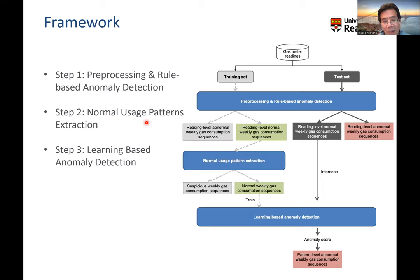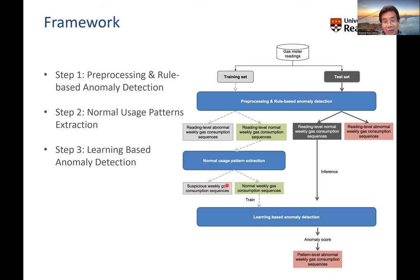Step two is normal user pattern extraction. Using normal user pattern extraction, we can filter out anomalous weekly gas consumption sequences. We use weekly rather than daily sequences because gas consumption behavior repeats weekly — for example, working days versus weekends show weekly patterns. After getting the normal user pattern, we have the normal data. Then we use that normal data to train our machine learning method, which is step three: learning-based anomaly detection.